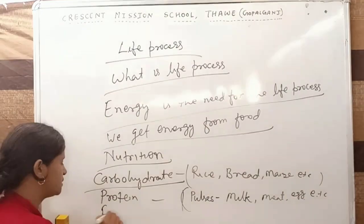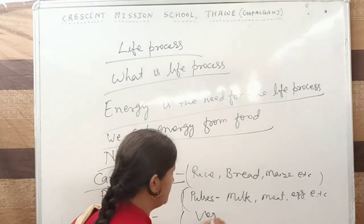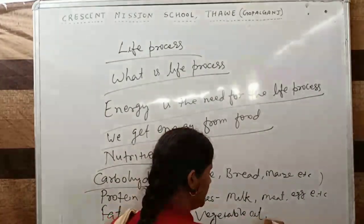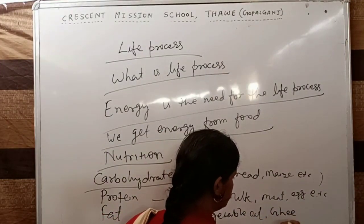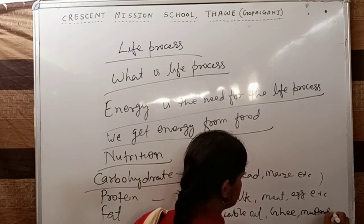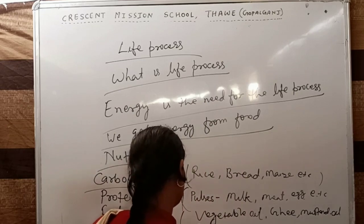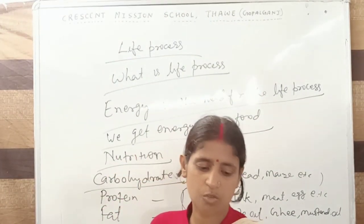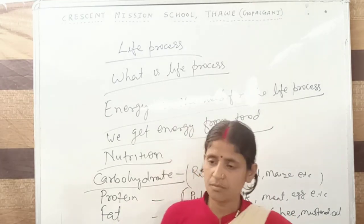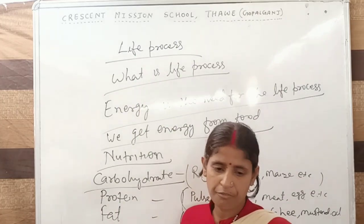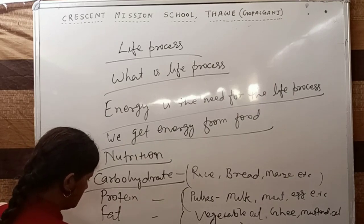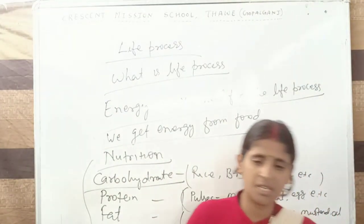After that, fat. We get fat from vegetable oil. Sources of fat include ghee, mustard oil, butter, and KTC. These are the essential sources of fat. We complete our nutrition by carbohydrate, protein, fat, vitamins, minerals, and water. Including all these, our body gets energy from these foodstuffs.